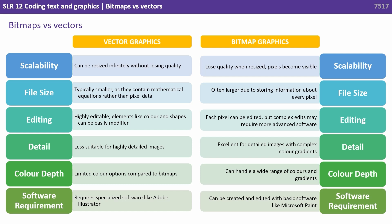Vector graphics are highly editable — elements like colour and shapes can be easily modified. With bitmaps, each pixel can be edited individually, but complex edits may therefore require more advanced software and editing skills.